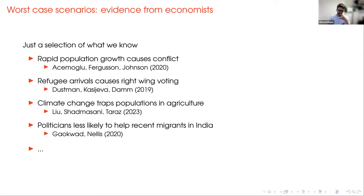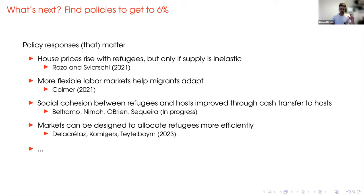So where are we next and what's a more positive view on what might happen? We have a worst-case scenario. It seems plausible that there will be large congestion effects and negative political economy responses to half a billion people trying to move across the world. But we also have the optimistic six percent welfare drop. The question is: how do we design policy to get from the worst case to the best case? That involves trying to smooth out the congestion effects.